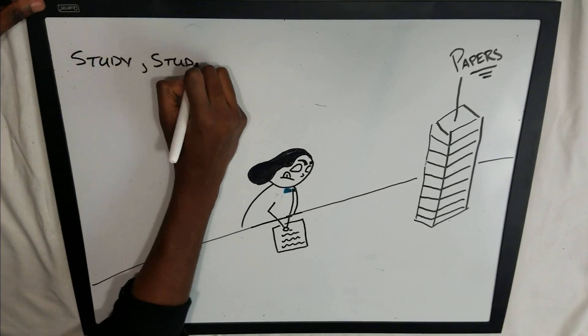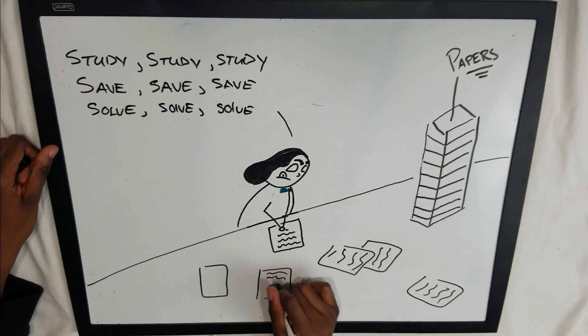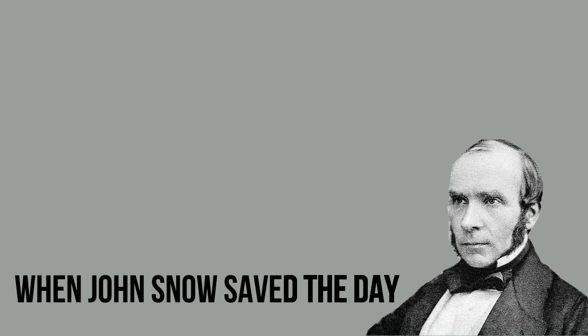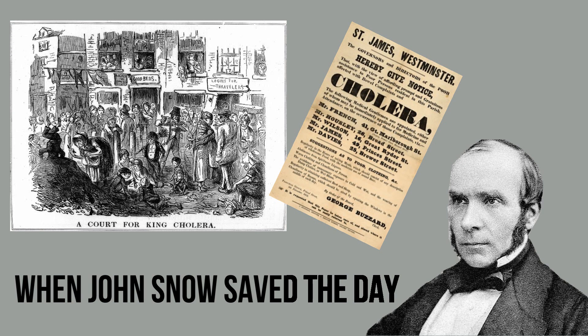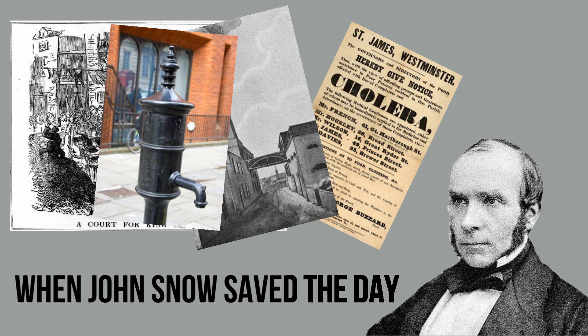So John Snow set out to prove them all wrong. And that he did. He proved them all wrong and saved the day on two separate occasions. The cholera epidemic of 1853 with the two London water companies and the 1854 Broad Street cholera outbreak. But you've heard those stories a million times before, so I won't bore you with the details.